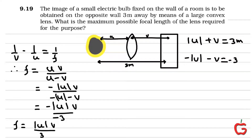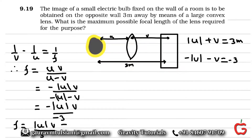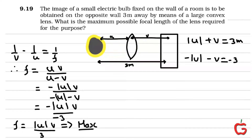There are two approaches to obtaining the maximum focal length. The focal length is maximum when U times V — the product of U and V — is maximum. The first method is the differentiation method, which is the official method used in case of such problems.